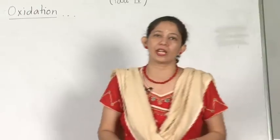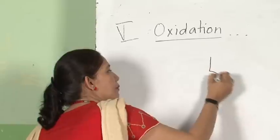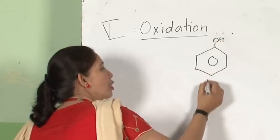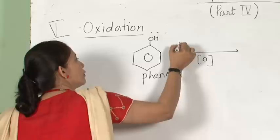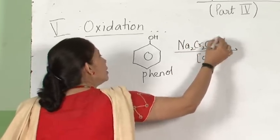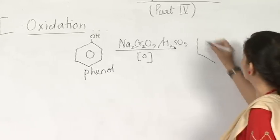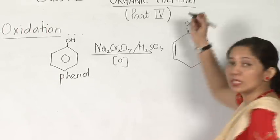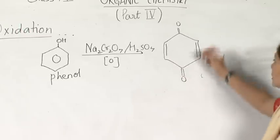Now in continuation with the oxidation reaction, some more reactions involving the aromatic ring. For example, if I take phenol — phenol on oxidation with one of the strong oxidizing agents, sodium dichromate, or even potassium dichromate in presence of sulfuric acid — I am going to get a diketone. This conversion was asked in 2010 and 2011. You can see from the structure it is a diketone; there is conjugation.